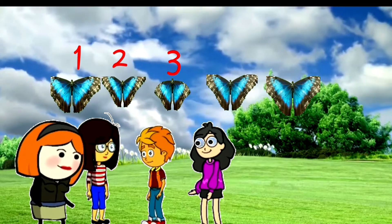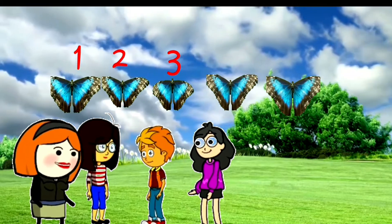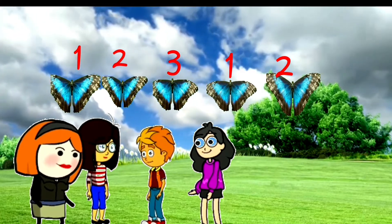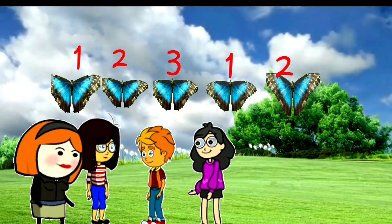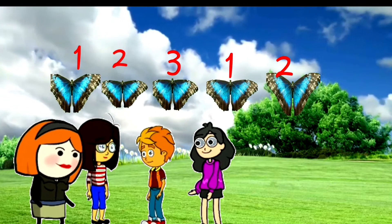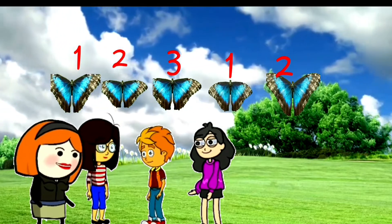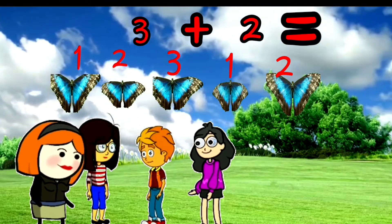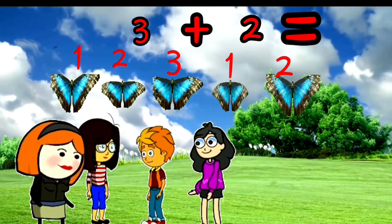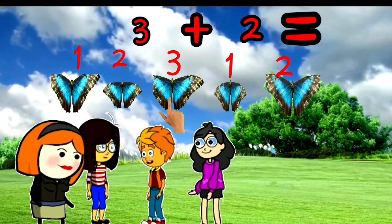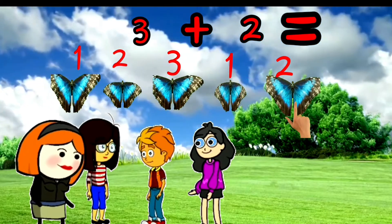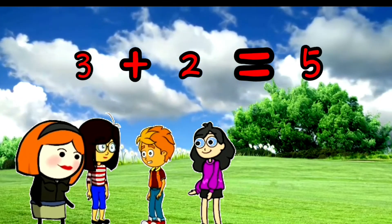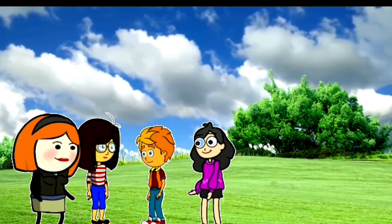So can you tell me all together how many butterflies are there? Teacher, there were three butterflies and two butterflies. So three plus two is equal to? Teacher, I will tell you. One, two, three, four, five. Three plus two is equal to five. Very good.